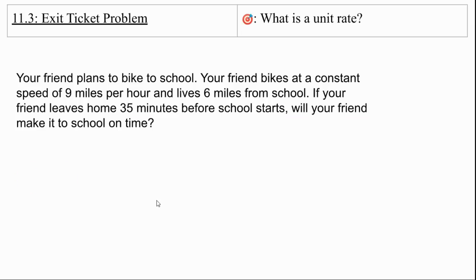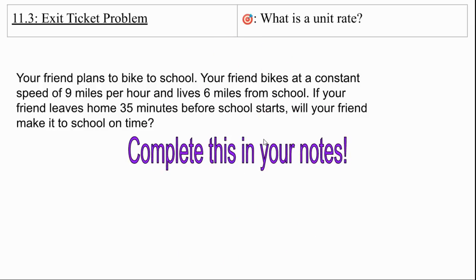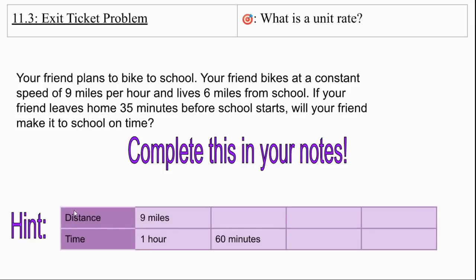Here's our exit ticket problem. You're going to need some help on this one, right? So make sure that you are thinking this through. Your friend plans to bike to school. Your friend bikes at a constant speed of 9 miles per hour and lives 6 miles from school. If your friend leaves home 35 minutes before school starts, will your friend make it to school on time? You're going to complete this one in your notes. Hint, though. Giving you a hint this time. Use the table.